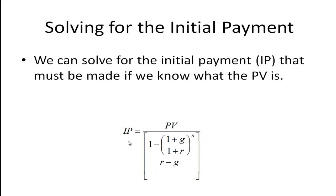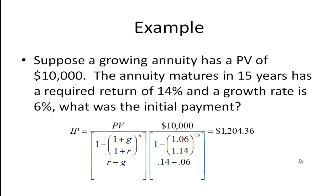Let's look at an example. Suppose a growing annuity has a present value of $10,000. The annuity matures in 15 years, it has a required return of 14% and the growth rate is 6%. What was the initial payment? We can work that out by substituting into this formula here and we get one thousand two hundred and four dollars and thirty six cents. Or if I want to say it another way, if I had started saving $1,204.36 and increased the amount that I put into the annuity account each time by 6% and did that for 15 years, the present value of that at a required return of 14% would be ten thousand dollars.